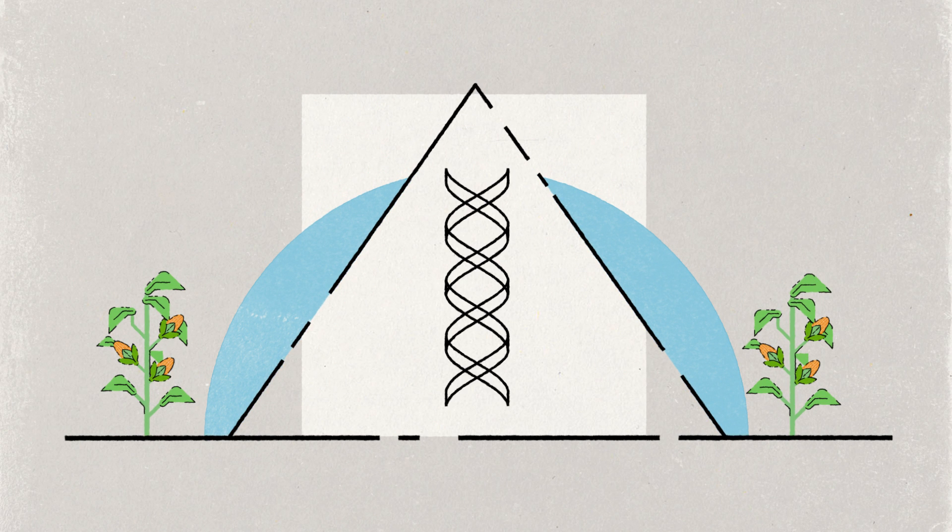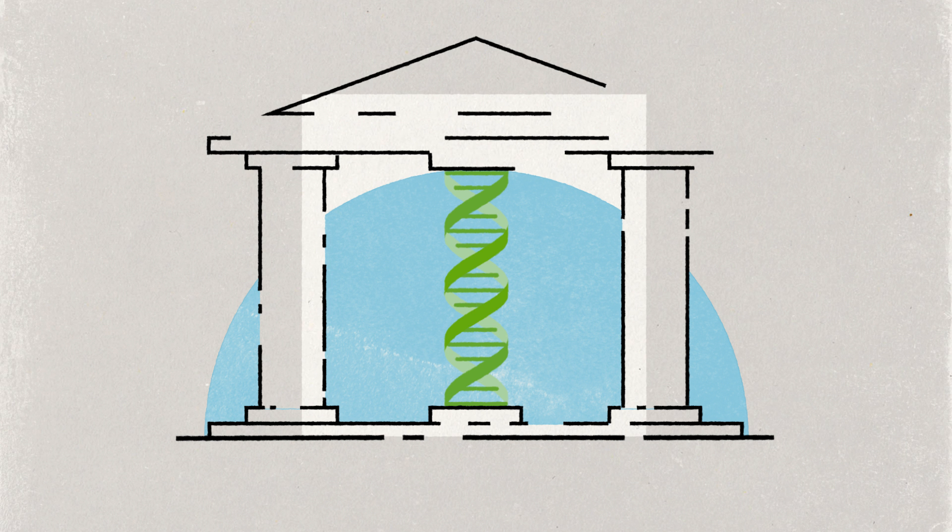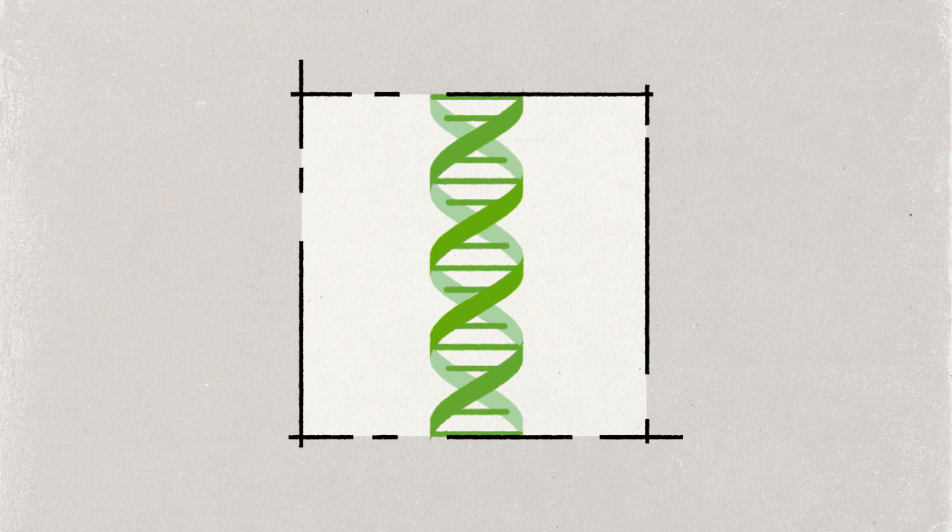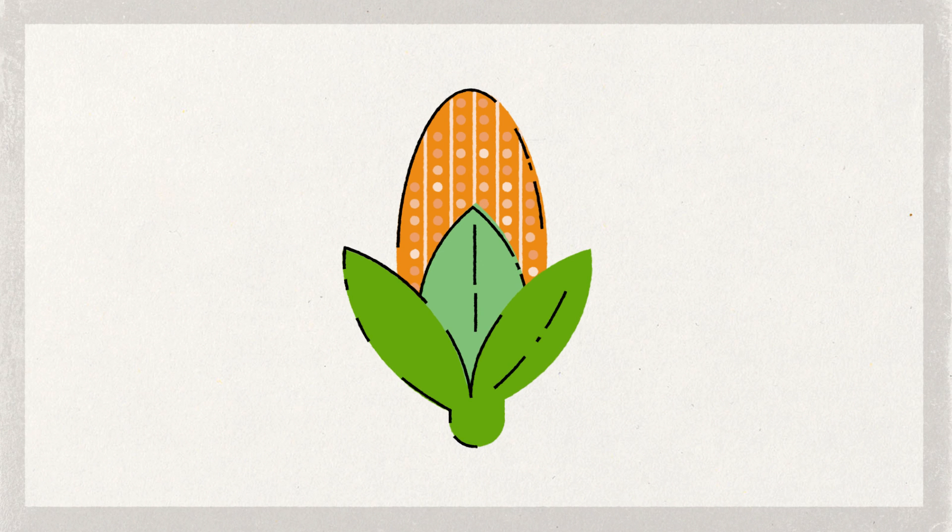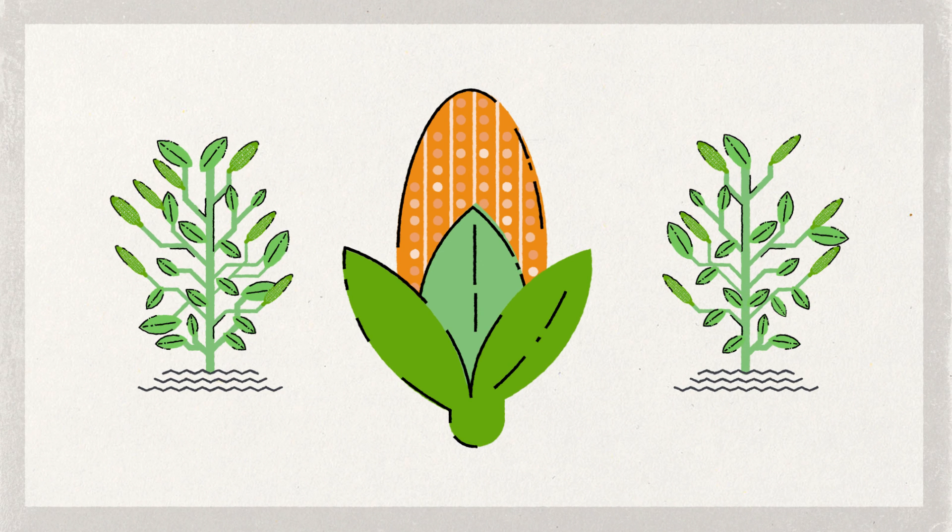Genetic improvement has been a central pillar of improved agricultural productivity for thousands of years, with modern crop varieties being much higher yielding and generally more nutritious than their wild ancestors.